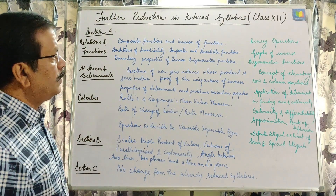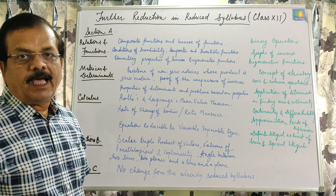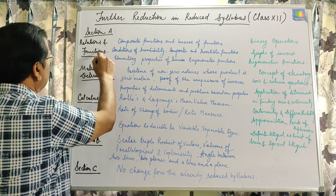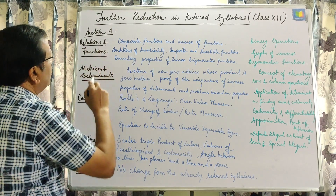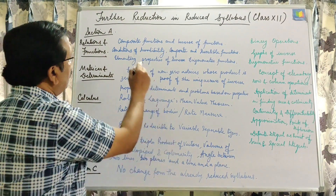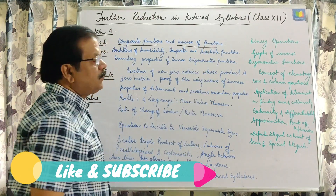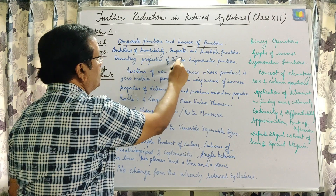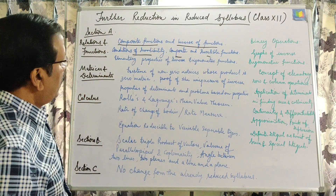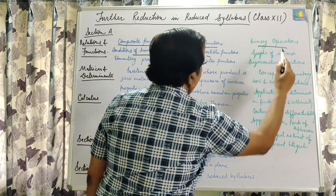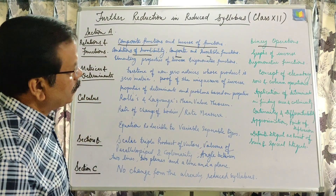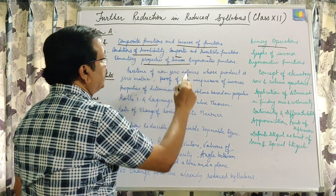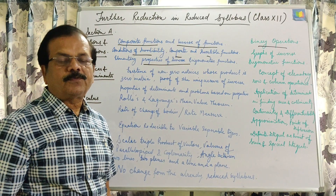Now I am going to discuss this. Before this, note that there are three sections — Section A, Section B, and Section C — in Class 12. From Section A, under Relations and Functions, the council has again reduced composite functions and inverse of a function. The scope of the syllabus had defined conditions of invertibility, composite and invertible functions. Additionally, binary operations and graphs of inverse trigonometry functions were already reduced from the main syllabus, and now elementary properties of inverse trigonometric functions are also reduced from the reduced syllabus.